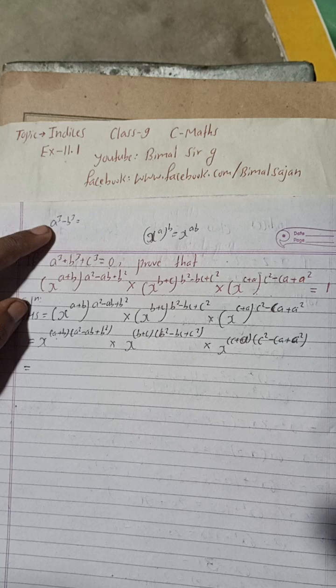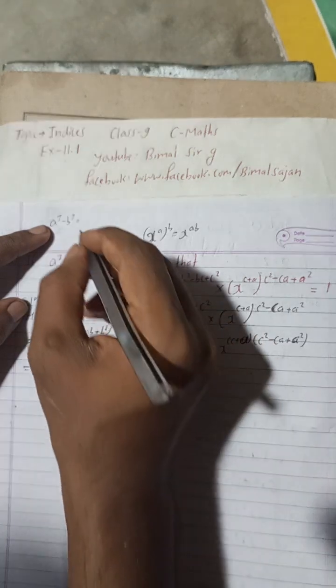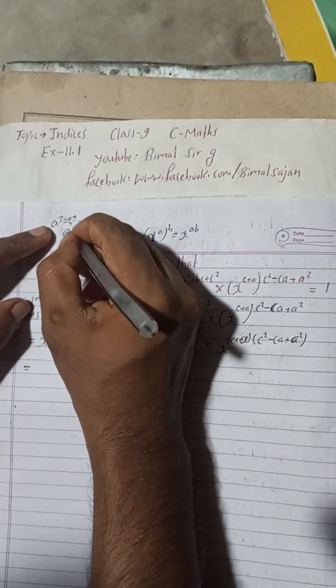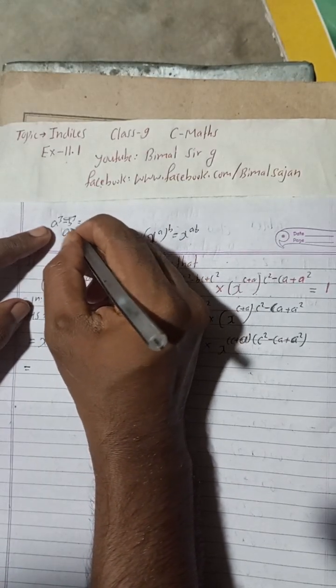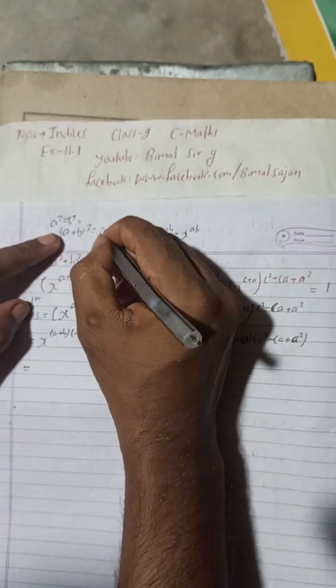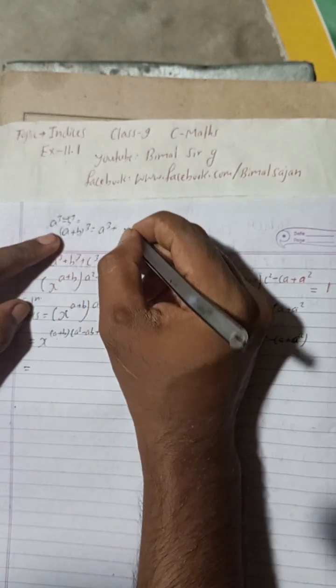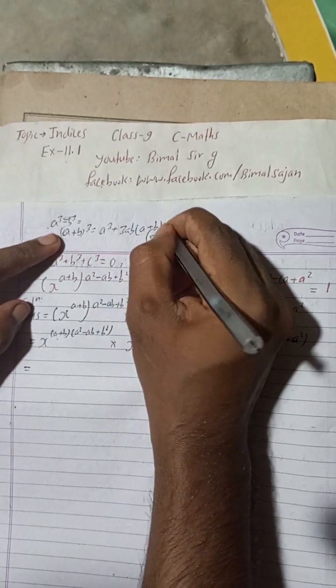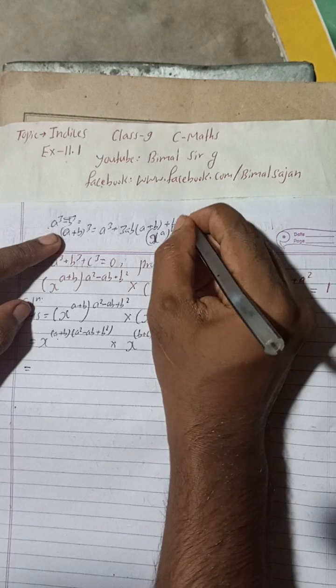Let me write the formula here. (a+b)³ formula will be a³+3ab(a+b)+b³.